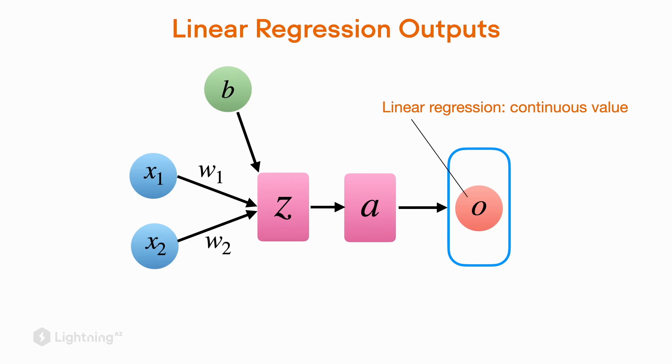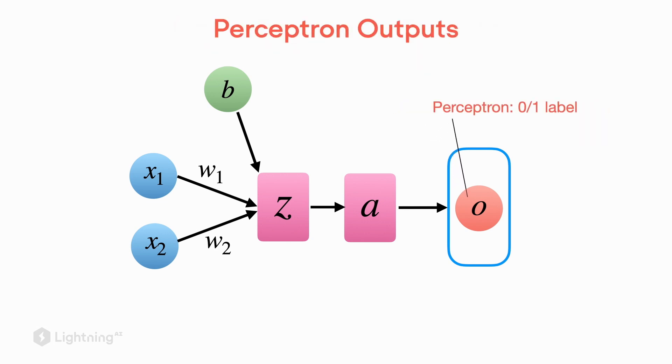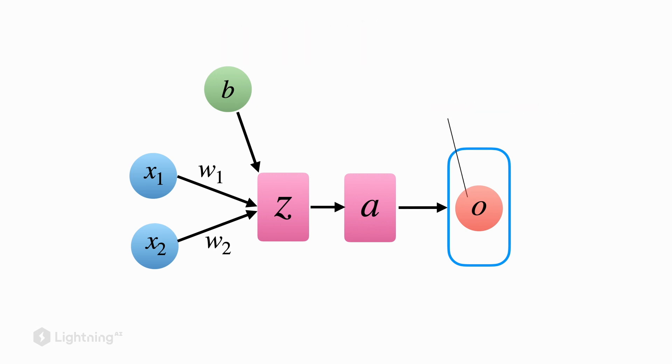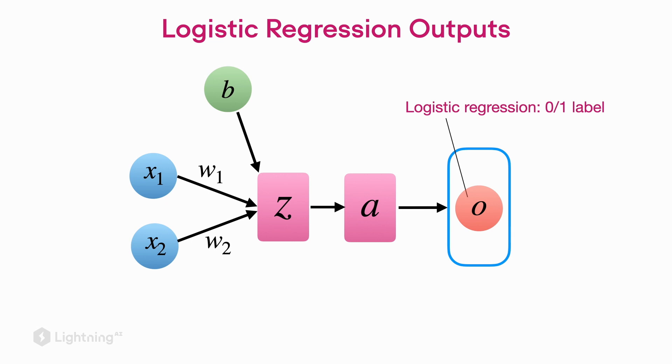If you are not familiar with linear regression, don't worry about it. However, if you are, linear regression can be seen as a single layer neural network where the output is a continuous value. The perceptron has a very similar structure, except that the output is not a continuous value but a class label, 0 or 1. Logistic regression has the same structure and also outputs a class label, though its name may sound like a regression method — in fact, logistic regression is a classifier, similar to the perceptron.